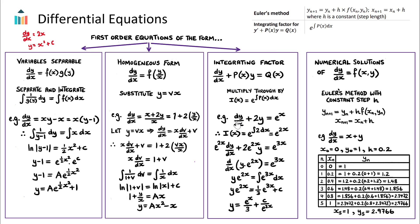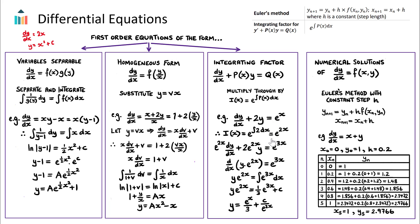For our example, the differential equation is dy/dx plus 2y equals e to the x. So p(x) here is 2. The integrating factor is e to the power of the integral of 2, which is e to the power of 2x. Using the integrating factor method, we multiply every term in our differential equation by this integrating factor. This gives us e^(2x) times dy/dx, plus 2e^(2x) times y, equals e^(3x). We can then combine the two left hand side terms — it's actually the reverse of the product rule.